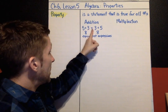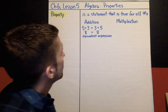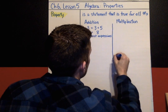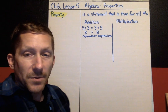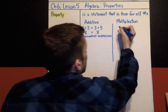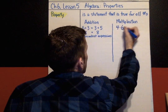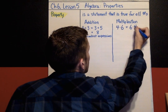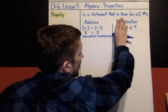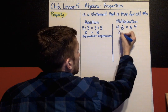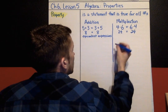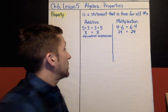The multiplication version of the commutative property — here's an example: 4 times 6 is the same thing as 6 times 4. We can solve both expressions: 4 times 6 is 24, and 6 times 4 is 24. These are equivalent expressions.